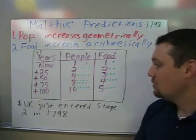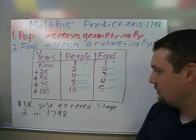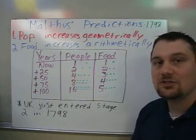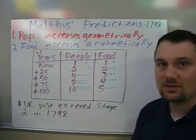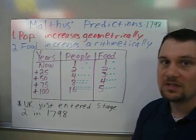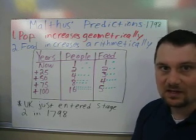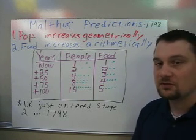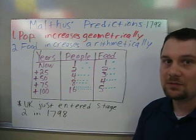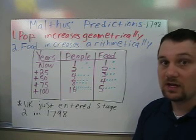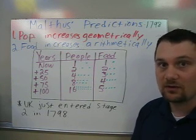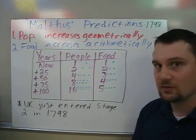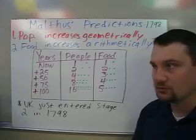You also need to understand that the United Kingdom had just entered stage two of the demographic transition model in 1798, so Malthus saw a huge population explosion around him due to the industrial revolution.